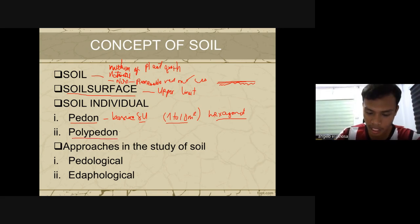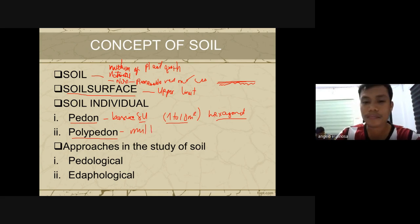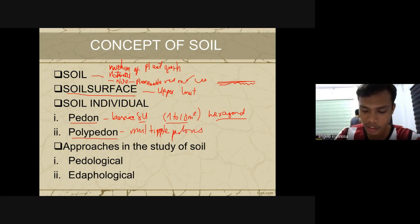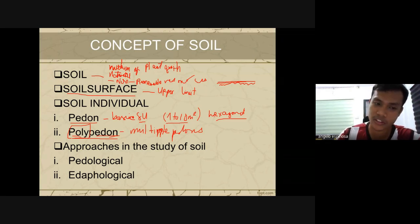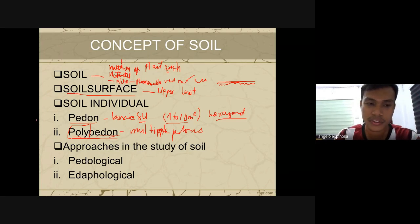When we say polypedon, it consists of multiple pedons — many basic sampling units. When the word starts with 'poly,' it means many. The polypedon is an essential soil individual comprising an identifiable series of soils in an area — many hexagonal columns used as basic sampling units in soil surveys.